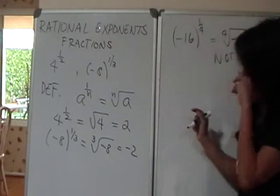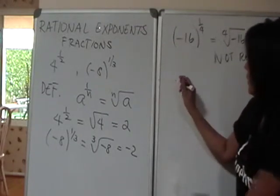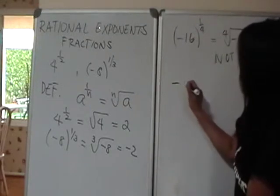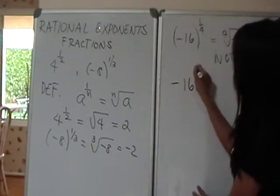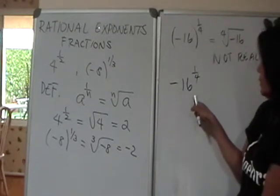Anyway, so that's what we do. And of course, we can play with this. Oh wait, before I leave this example, it's a different story if I have negative 16 to the 1/4.